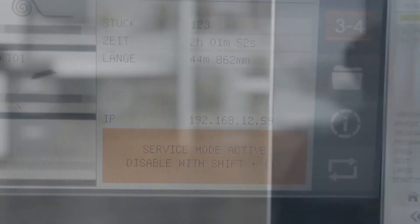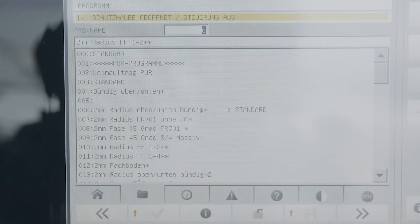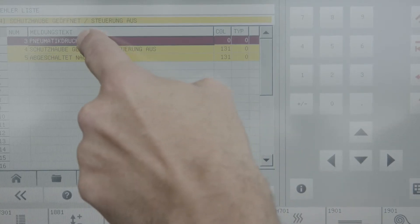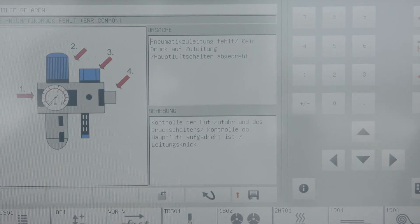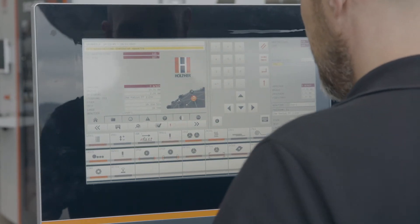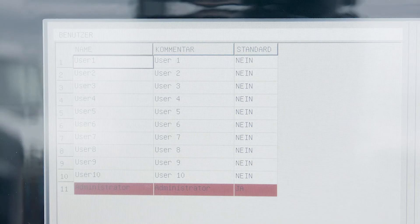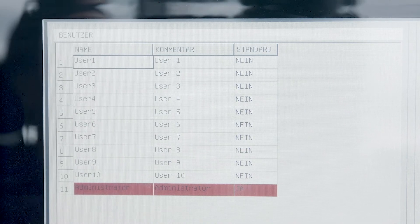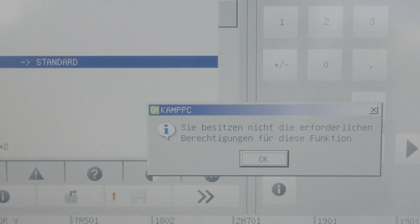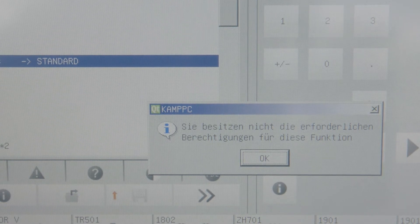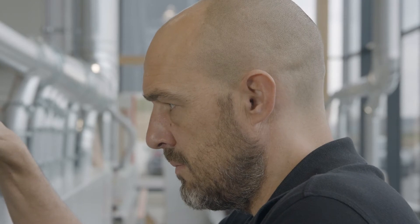An extensive program memory with the complete recording of all operating data as well as service messages in plain text are standard. An individual user administration with password protection and single authorizations can be set up for your needs. For example, the apprentice can use all programs but has no authorization to change them, while you as the administrator have access to the complete operating spectrum.